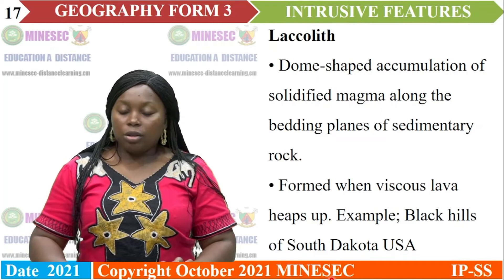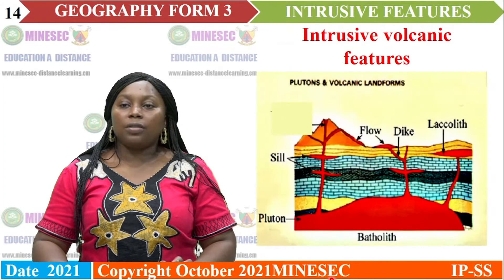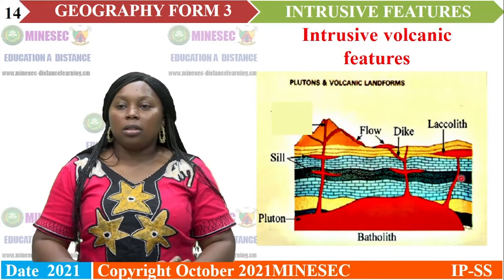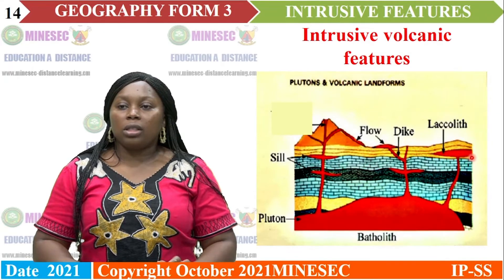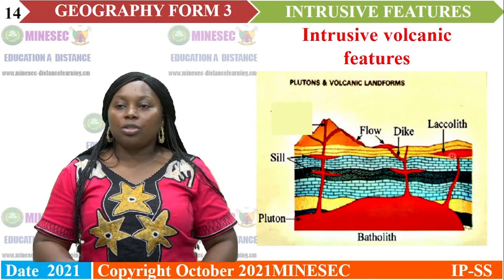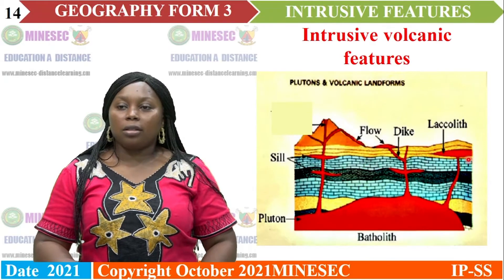Let us go back to our diagram and identify the laccolith. Here you can see the laccolith — a dome-shaped feature — with an accumulation of molten material that has cooled and solidified.